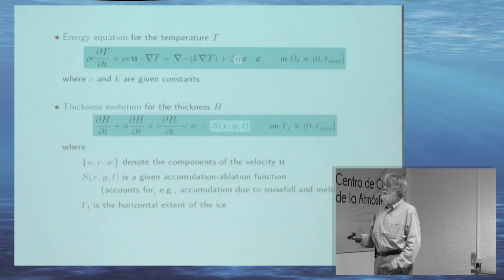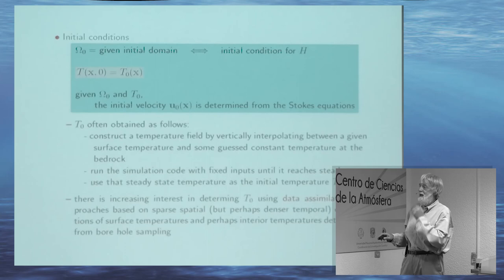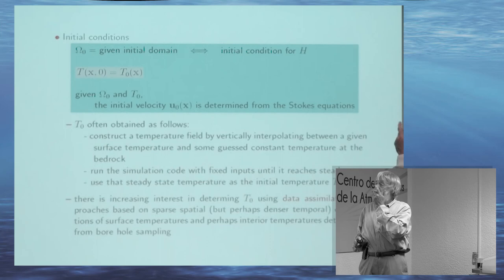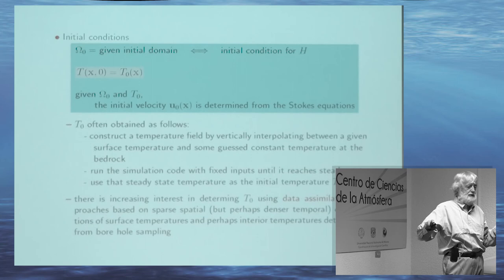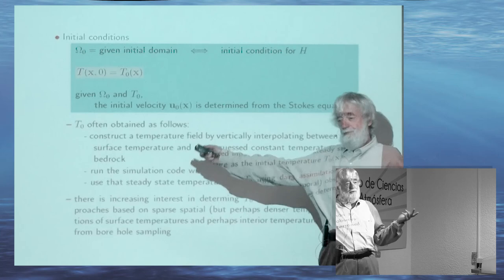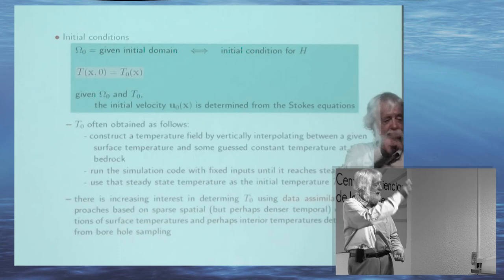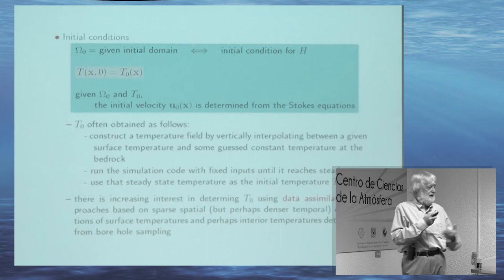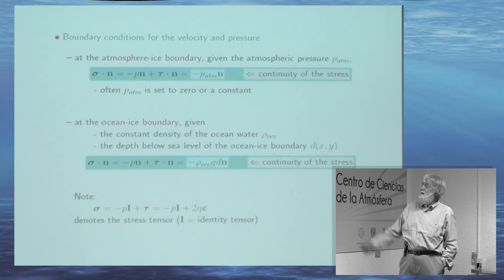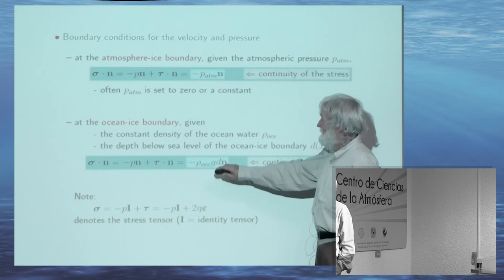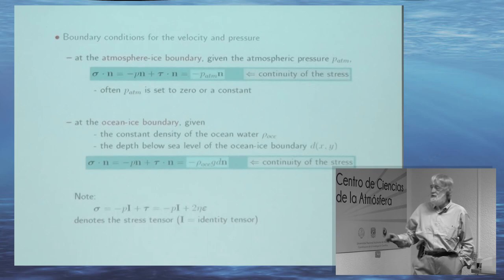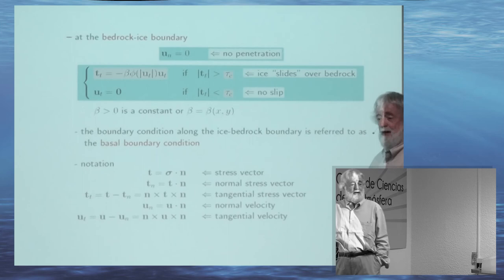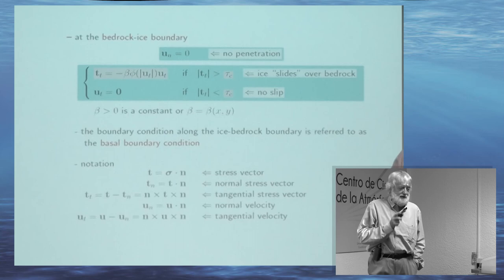We need initial conditions for temperature and height. The velocity doesn't need initial conditions because it's a quasi-static model. One of the big weaknesses of ice sheet modeling is that no one knows what the initial temperature is inside the ice. People can measure surface temperature accurately from satellite data and drill holes — in all of Greenland they've only drilled about 50 holes — so people have to make guesses or use data assimilation techniques. The ocean-atmosphere boundary conditions are standard.